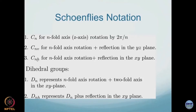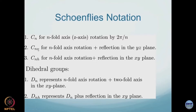Those are the shorthand notations and each one is a point group. Cn is a point group, Cnv has Cn as a subgroup, and Cnh also has Cn as a subgroup.